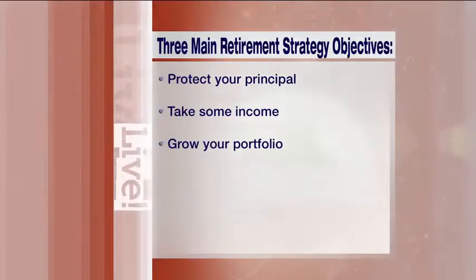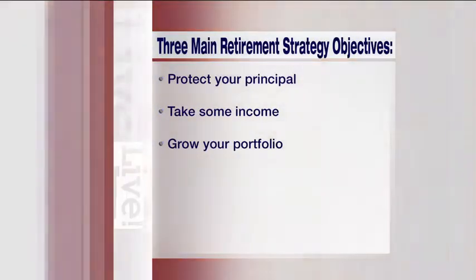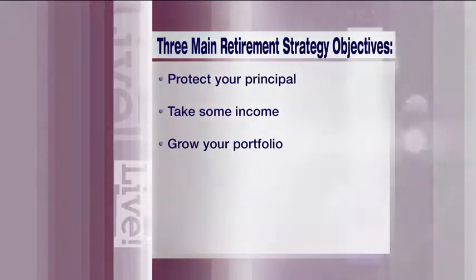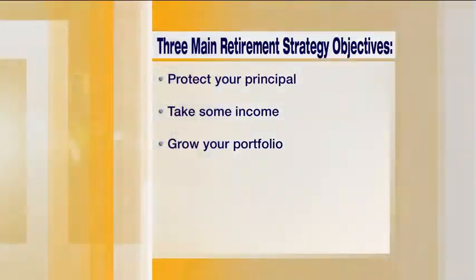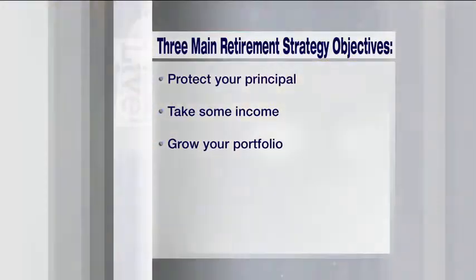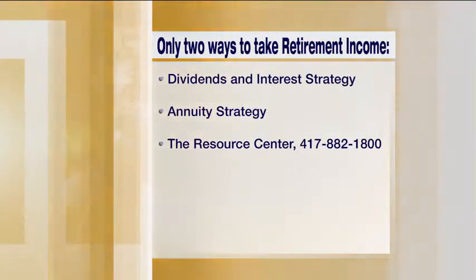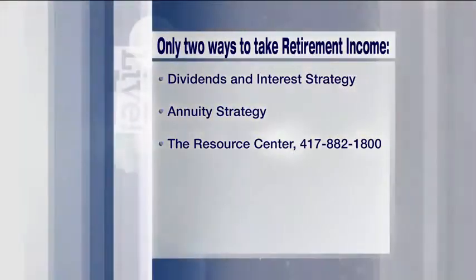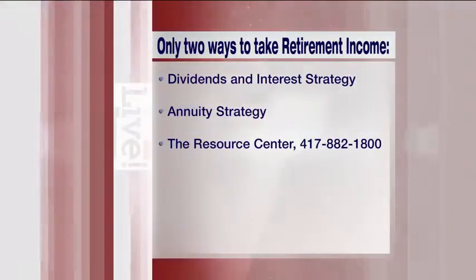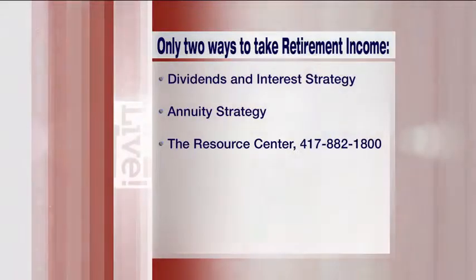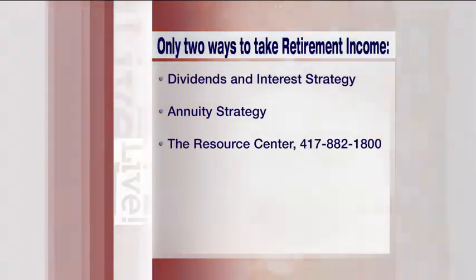There are really only two ways to take money out in a retirement income strategy. You've got dividends and interest, or you've got an annuity strategy. Those are the two basic ways that people are going to access their retirement income.